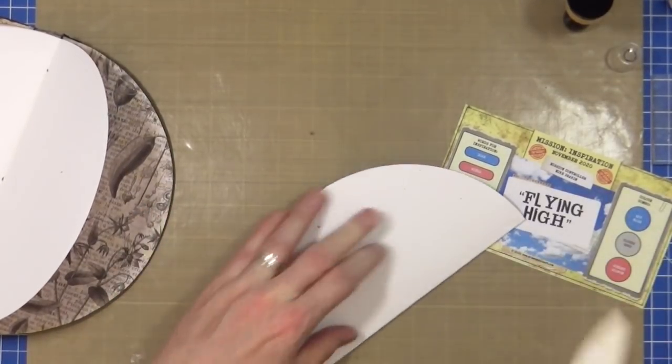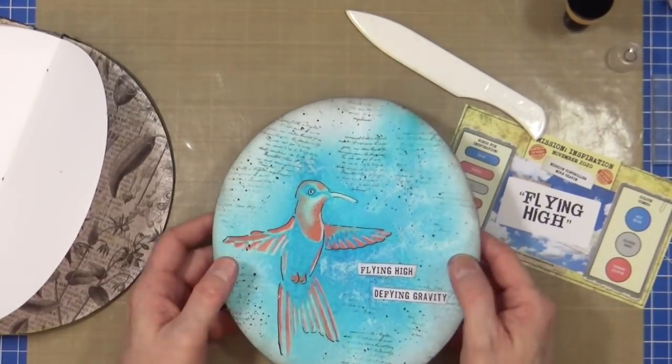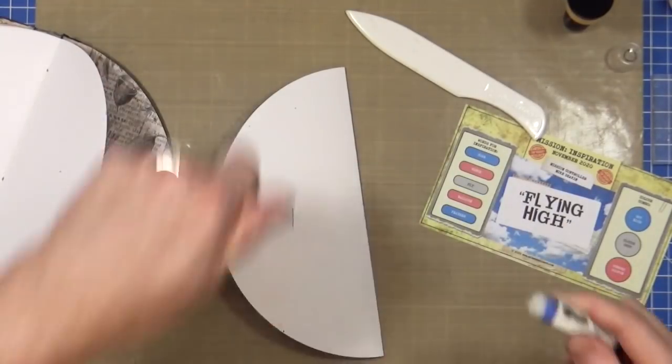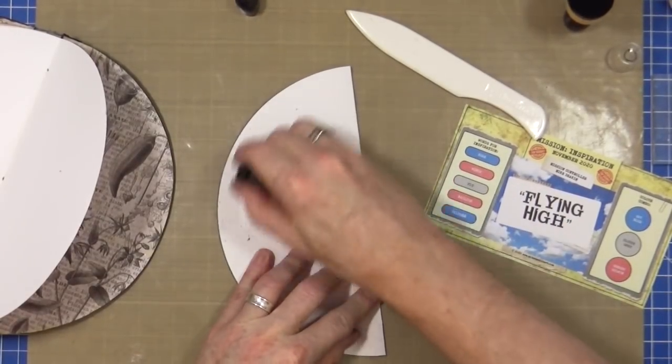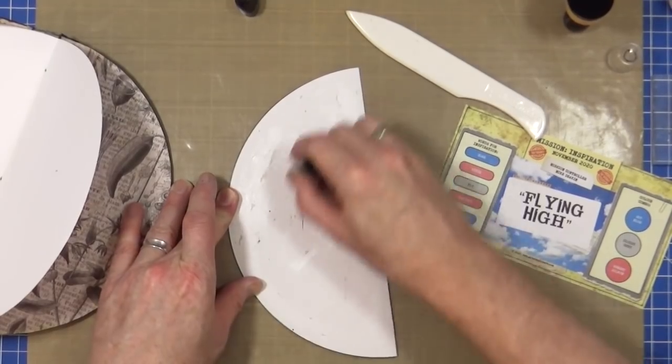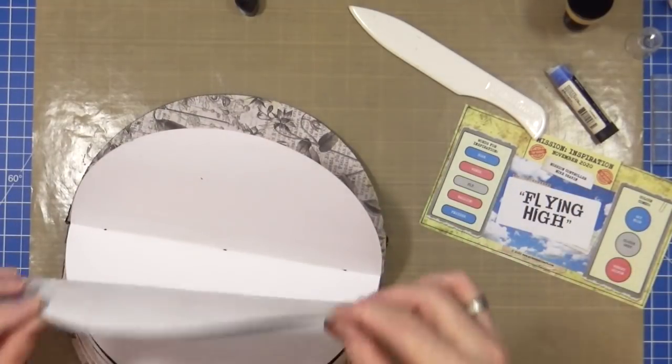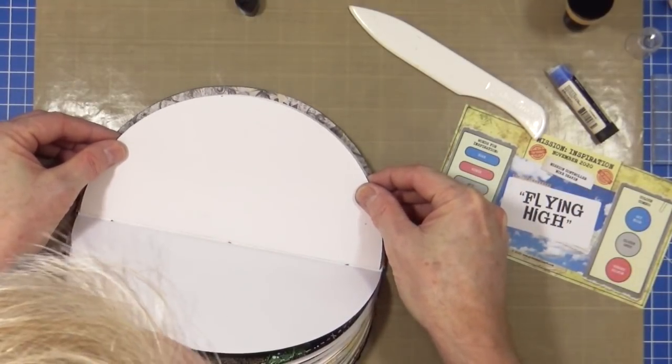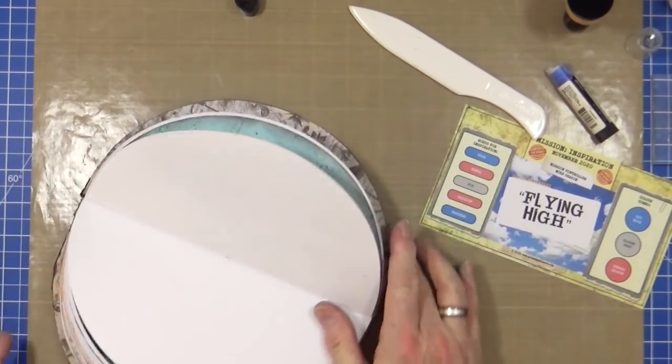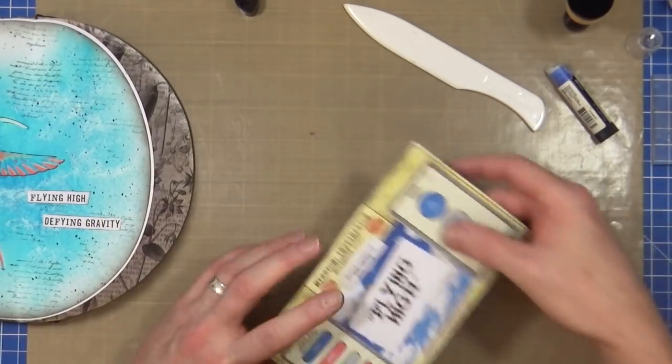Hopefully everything's stuck down well enough. Yep. Now then, what did I do with that glue stick? I put it away, didn't I? All the way around. And then let's take the book. It's just slightly smaller than the page by design. Stick that down into the journal. And then fold that in half.